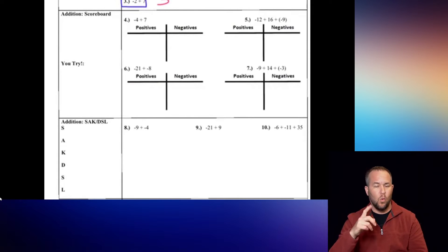You've now seen the number line and scoreboard methods — both require props like a drawn number line or scoreboard. This final method, SAC-DSL, is the one I discuss most in class. You can always draw a quick plus and minus column if you use the scoreboard, but SAC-DSL won't need any of that.